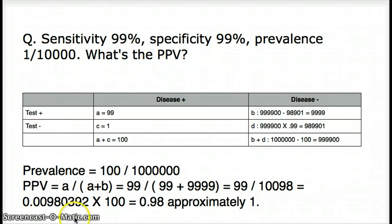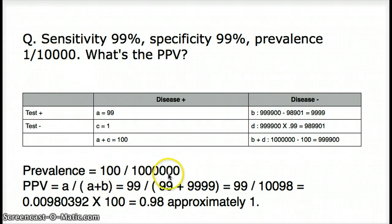In a question like this, it's very important to realize that none of the numbers are real numbers — they're all probabilities. So if we keep the probability the same by changing the numbers, it's not going to give us a faulty result. What I did is instead of taking 1 out of 10,000, I made this 100 out of a million by adding two zeros at the top and bottom, keeping the probability the same.